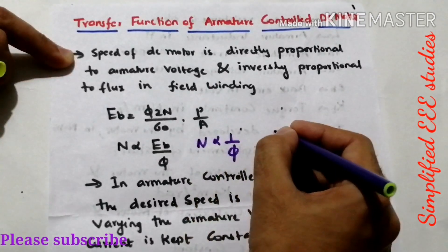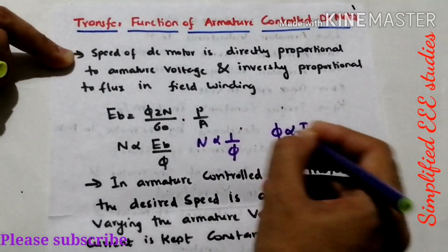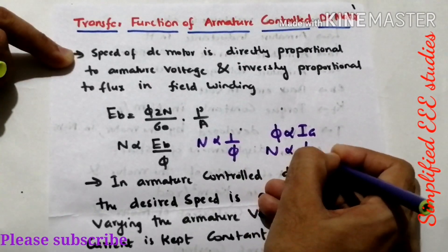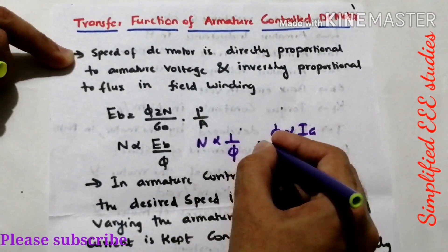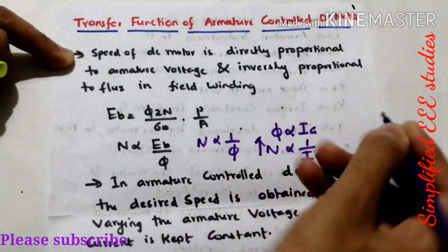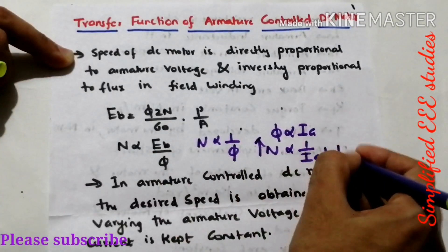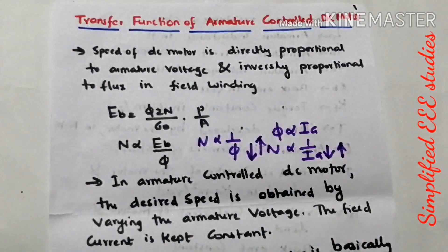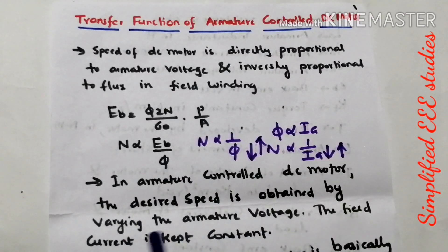That means flux is directly proportional to armature current. Therefore I can write N is proportional to 1/IF. So as the speed increases the armature current comes down, or vice versa. As the armature current increases, speed is coming down. In armature control DC motor, the desired speed is obtained by varying armature voltage and the field current is kept constant. That is a true fact regarding armature control technique.